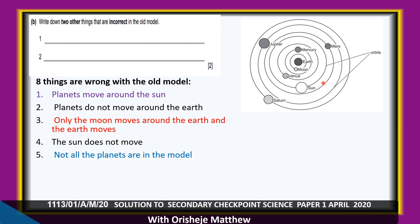Not all the planets are shown in the model. You can see Venus, Mercury, Mars, Jupiter, Earth, and Saturn — but there is no Neptune and no Uranus.